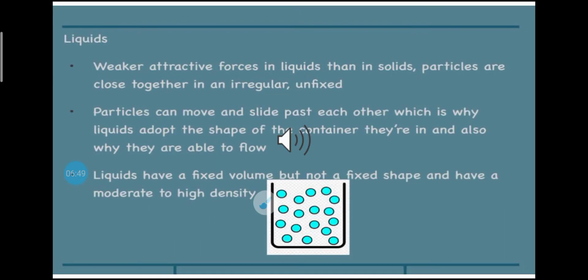Moving forward to liquids. The second type of matter is liquid. Liquids have weaker forces of attraction, weaker than solids I mean, and they can move. They can vibrate, bounce between each other. They can flow. So they have a fixed volume but don't have a fixed shape. They take the shape of the container they are in and they have moderate to high density.